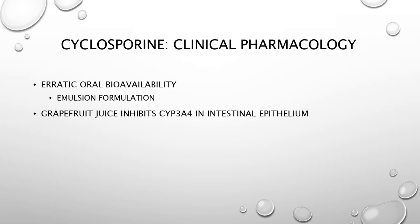Now we'll look at the clinical pharmacology of cyclosporine. Cyclosporine has erratic oral bioavailability, and therefore we administer it in an emulsion formulation. It is really important that a clinician monitors the blood concentration levels of cyclosporine A when administering it. Also important to remember is that if a patient drinks grapefruit juice, it will inhibit CYP3A4 in intestinal epithelium, leading to decreased breakdown of cyclosporine A and increased levels in the blood, which can increase the risk of adverse drug reactions.